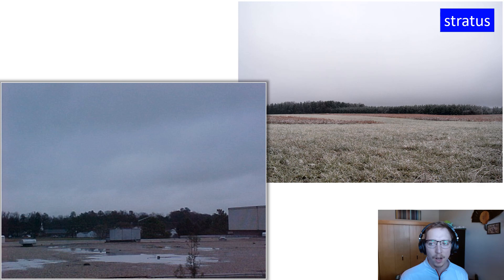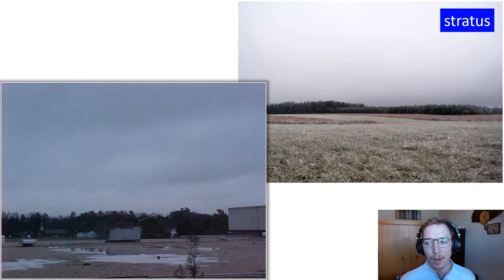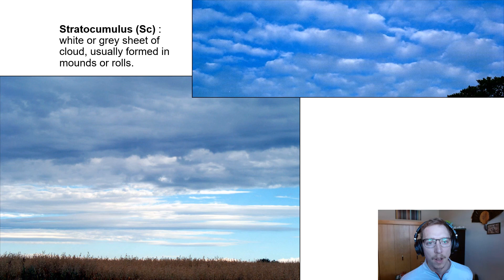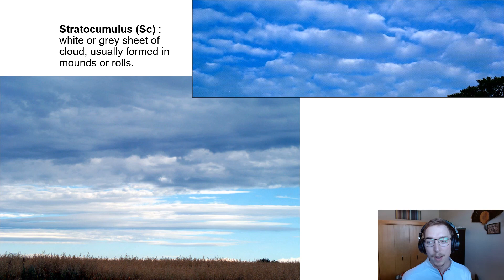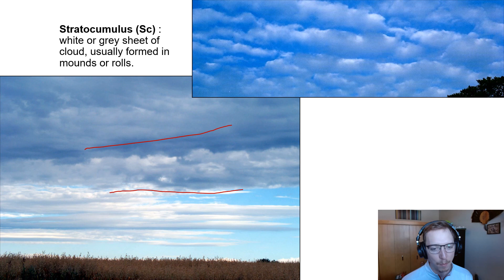Stratus clouds form in low horizontal layers that may occasionally produce light drizzle or mist. They are light gray with a uniform base and appear to blanket the entire sky. Stratocumulus clouds consist of broken patches of clouds generally much larger than those of altostratus. They often cover vast stretches of the subtropical oceans, providing a ready supply of surface moisture, and reflect considerable amounts of incoming solar radiation.